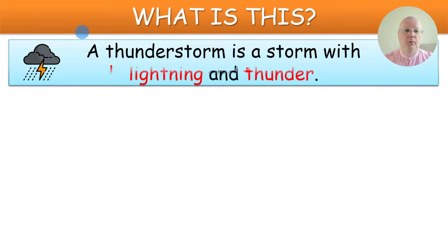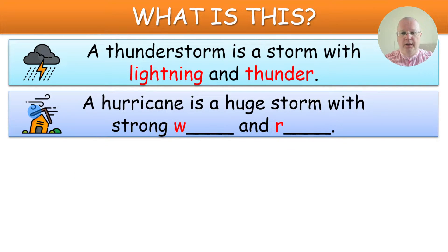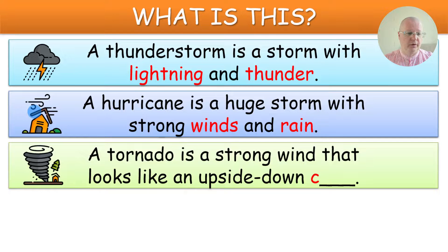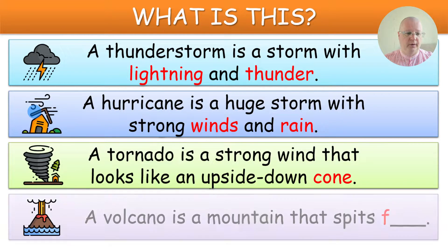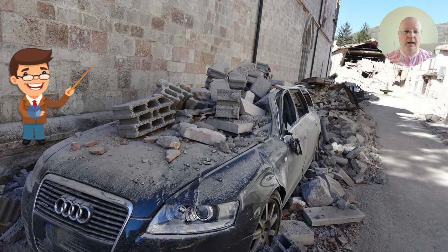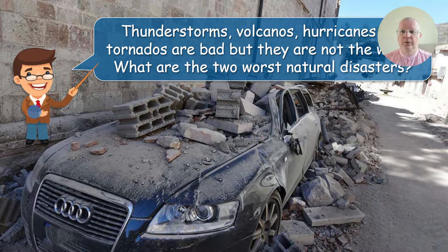What is this? It's a hurricane, and a hurricane is a huge storm with strong winds and rain. You do the same for the tornado and for the volcano. This wraps up the beginning of the second lesson, so you tell your students that thunderstorms, volcanoes, hurricanes, and tornadoes are bad — but they're not the worst.